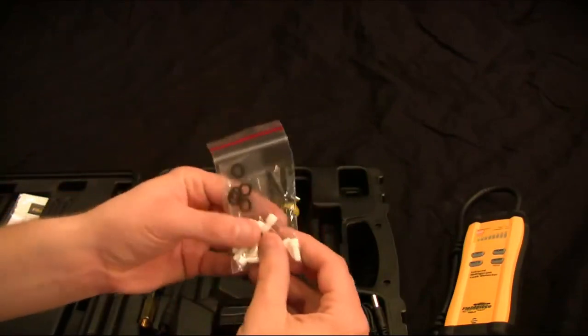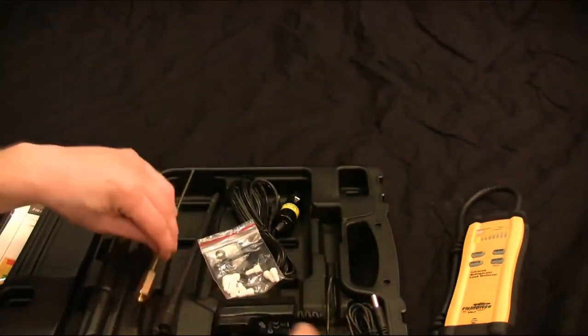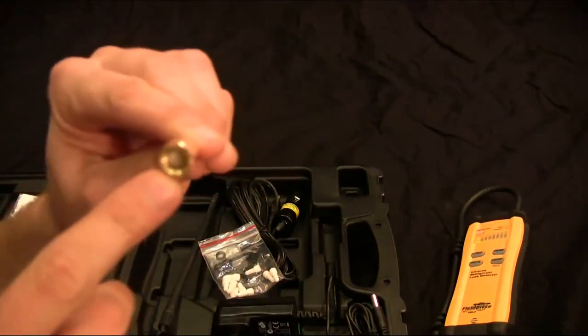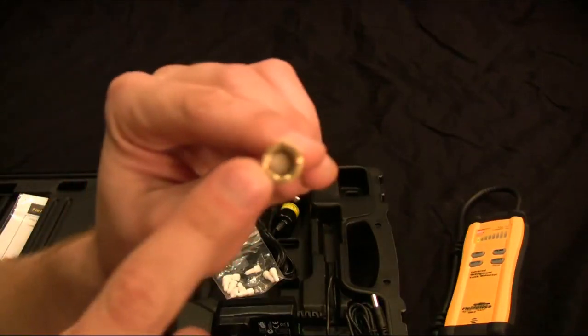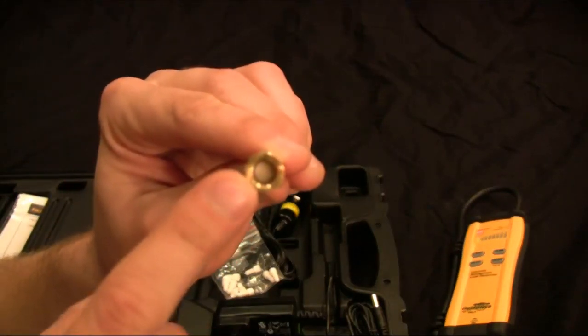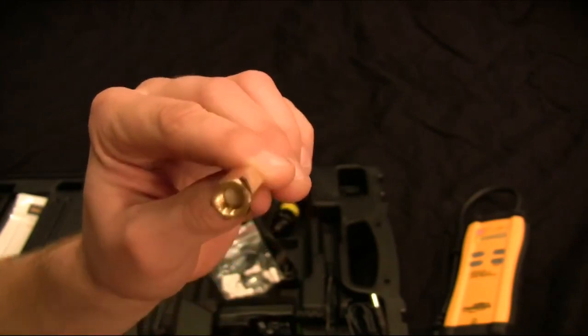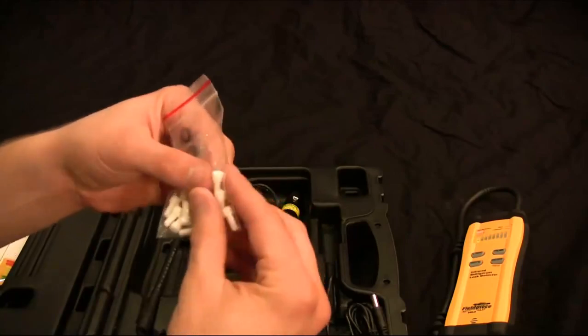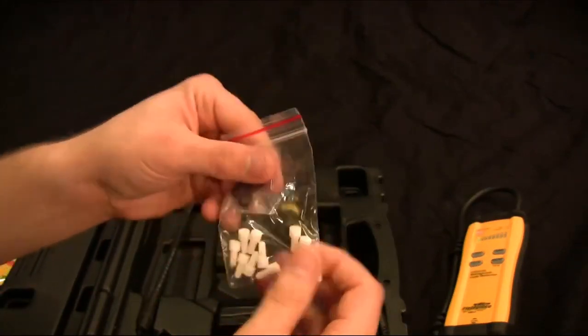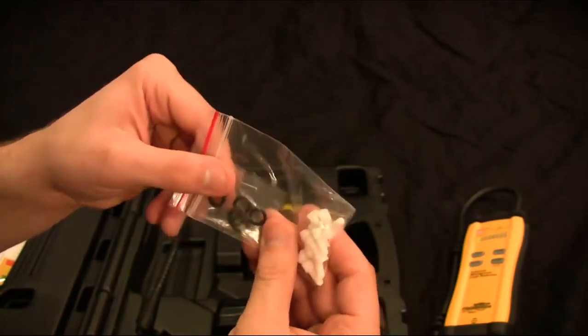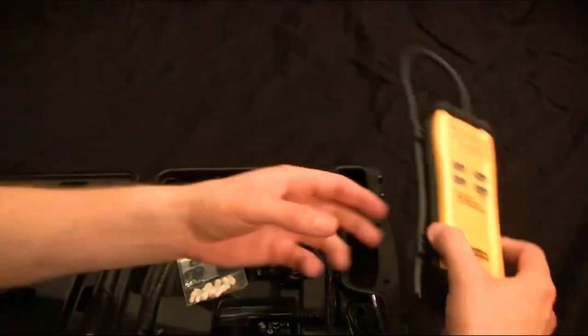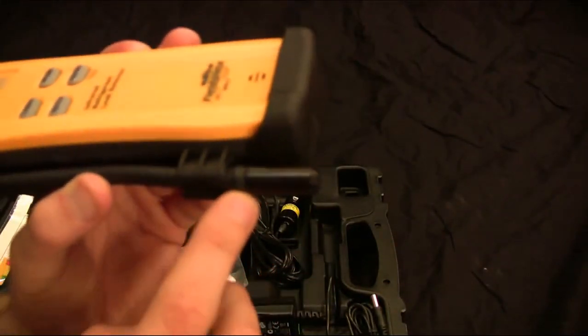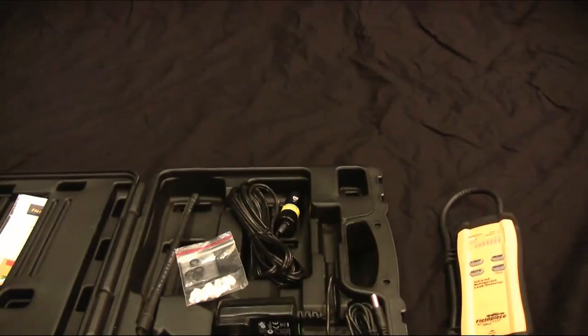It also comes with replacement filters. The filters are in the tip of the SRL-2. You can see that white filter right in there. Now you just want to replace these when you can see any little bit of dirt, generally about every couple months or so, or when you use it a lot, maybe every month. It comes with 10 replacement filters, and also a few spare O-rings. The O-ring is right on this tip, so if it dries out you can replace it. And that's the only maintenance you need to do on the SRL-2.